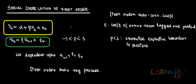The error term ut is dependent upon ut-minus-1, rho, and epsilon t. Epsilon t will need some assumptions — it is called the white noise term, which we will discuss later. In the first order autoregressive process, ut is dependent upon ut-minus-1, rho, and epsilon t. This process, where ut is dependent only on the error term lagged by one period, is called the first order autoregressive process.